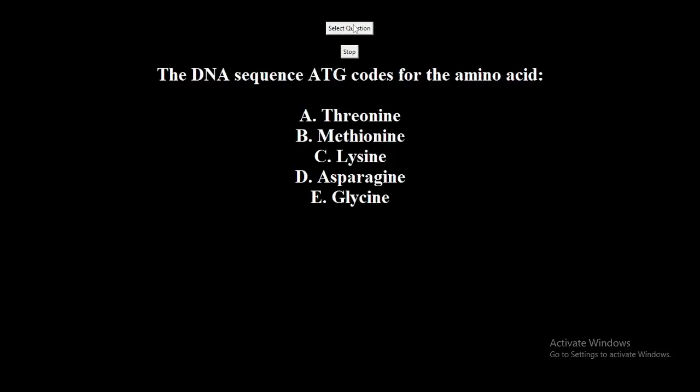The DNA sequence ATG codes for the amino acid: A. Threonine. B. Methionine. C. Lysine. D. Asparagine. E. Glycine. The correct answer is Methionine.